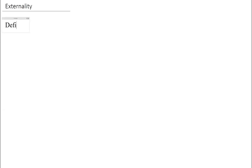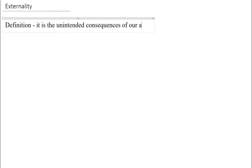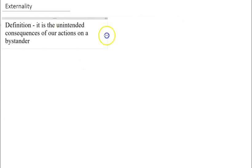If we look at the definition of an externality, in simple terms we can say it is the unintended consequences of our actions on a bystander. It could be a bystander who is near us or probably far away from us, but it is basically how our actions affect the bystanders around us.